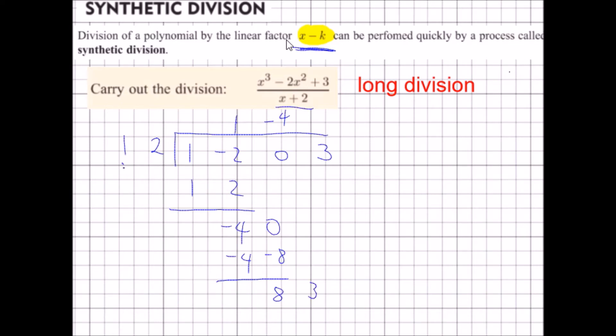Bring down the 3, times by 8, and I get 8 and 16. Subtract, I get negative 13.